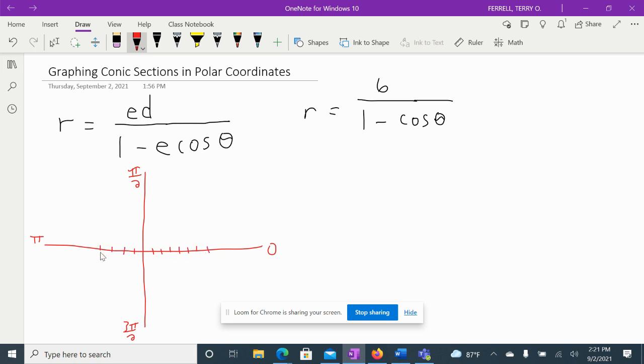And what we're going to do is plug some points in so that we can get back the polar coordinates so we can graph it. So one thing to remember, whenever it's in this form, if it's cosine in the denominator, it's going to be a polar graph left or right. If it's minus, the directrix will be on your left. If it's plus, the directrix will be on your right.